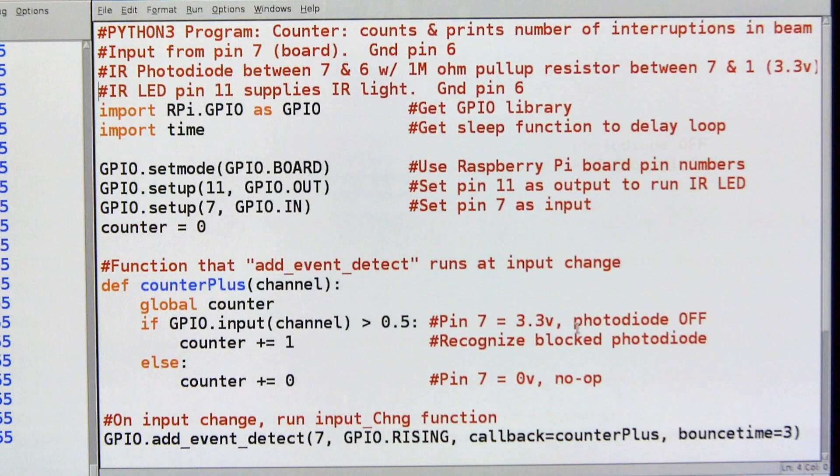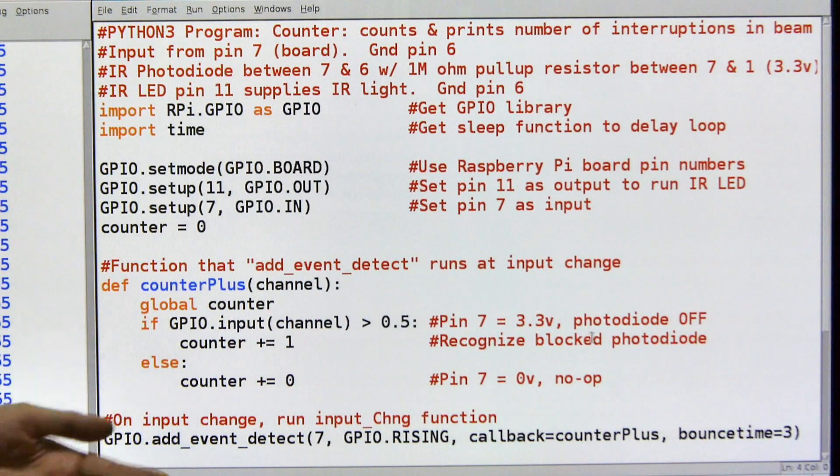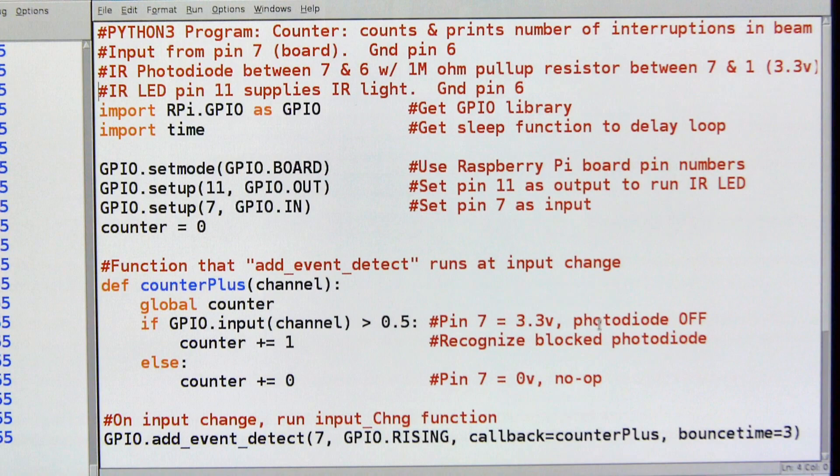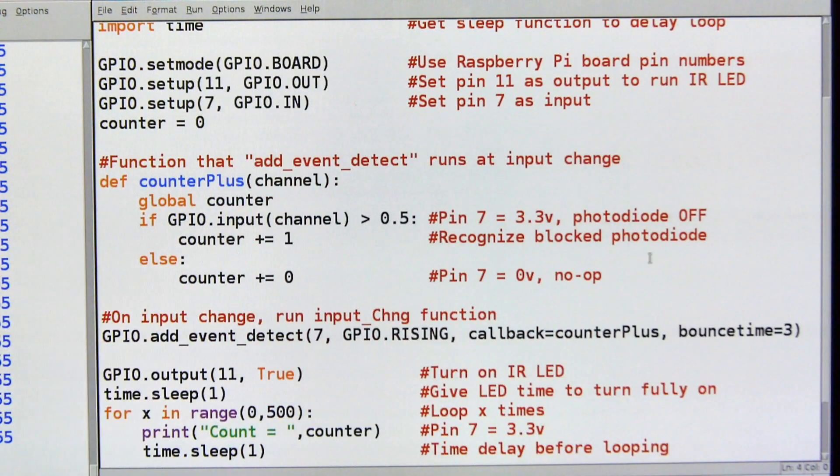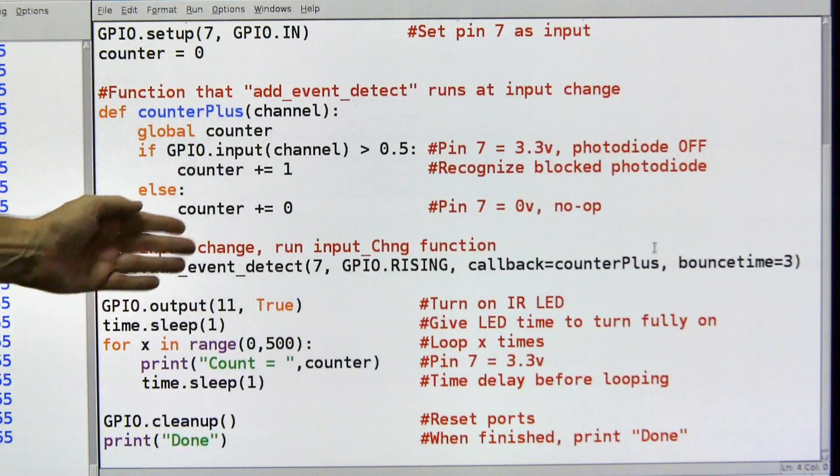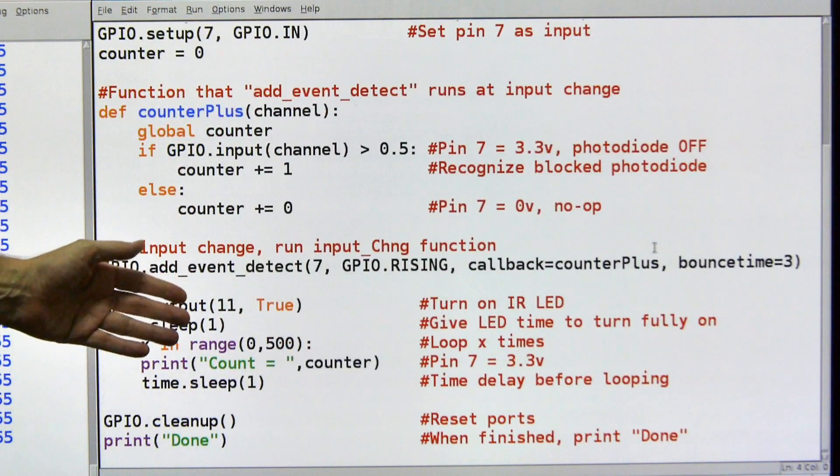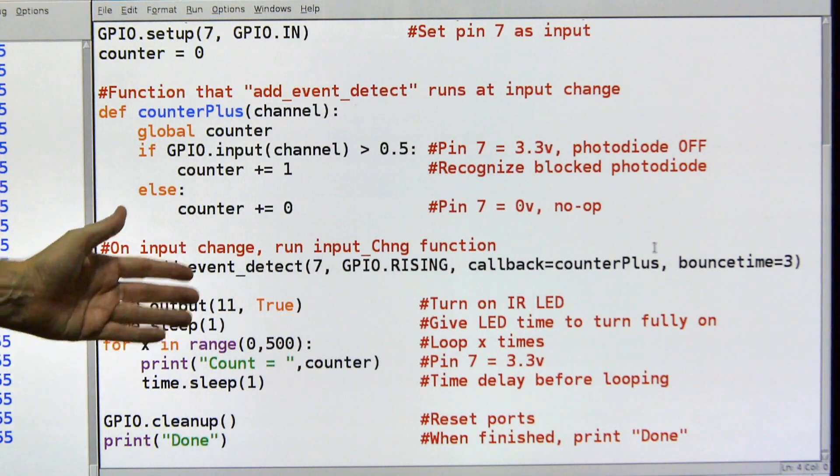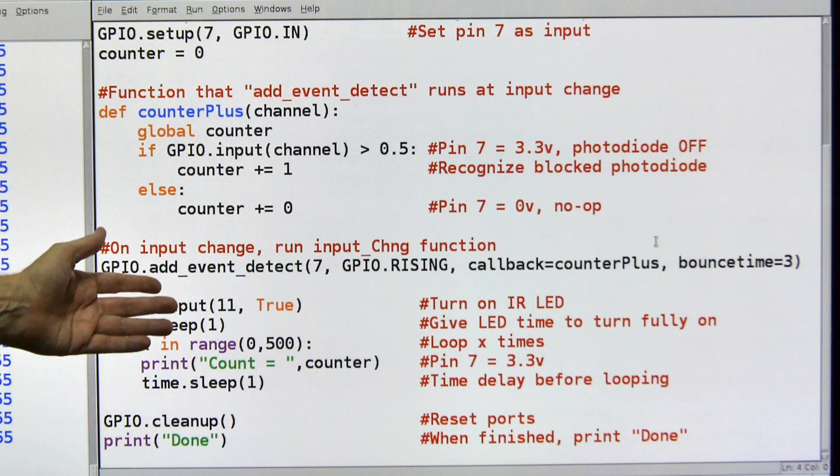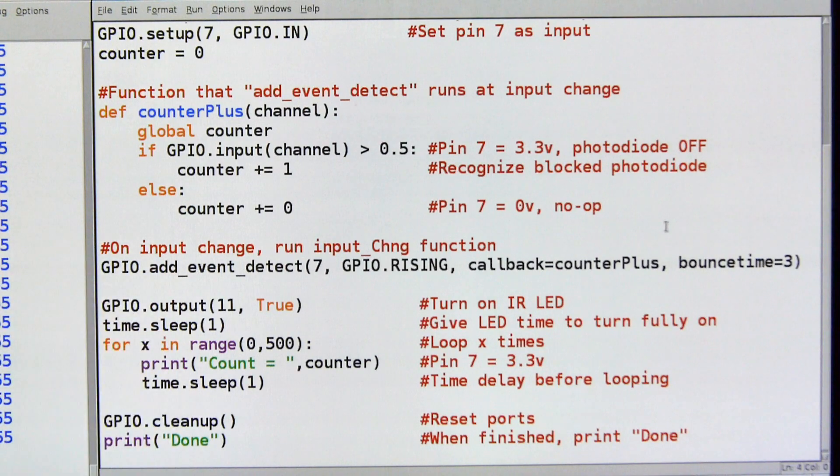And that's pretty much it for this. So this is a nice little counter program. It'll count people going by, wildlife passing a point, products on an assembly line, anything you need like that. But now there's another program buried in here. If we somehow timed how many events per second or per millisecond or something like that, then we could produce a tachometer, but I think I'll save that for another video.